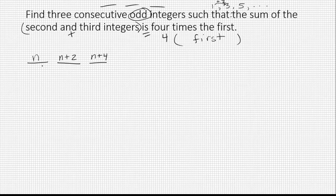So we're still going to use n plus two and n plus four. This relies on n being odd. So at the end of the problem, it will be important to make sure that's true. So let's set up our equation.